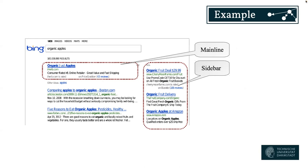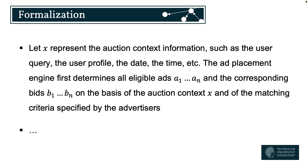One example is the Bing search engine, taken from a paper we are exploring. This is a figure showing someone searching for organic apples. There are two components — mainline and sidebar — which place ads. Different companies such as Amazon are showing you organic apples you can get there, and also other companies like The Fruit Company or iherb.com.